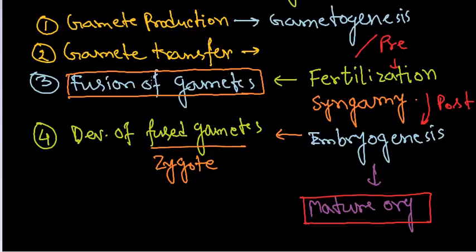Watch it first, then come back here and watch this video because it will make a lot more sense. So let's begin with this first stage of sexual reproduction, which is a part of the pre-fertilization process, which is termed as gamete production or gametogenesis.